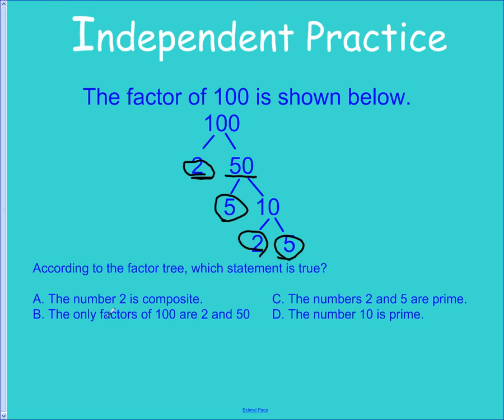So which statement is true? Number 2 is composite? No, 2 is prime. Only factors of 100 are 2 and 50? Well no, we can go a lot more than that. 2 and 5 are prime? That's true. 10 is prime? Well, it's not prime because we broke it into 2 times 5. So the only one that makes sense is C.